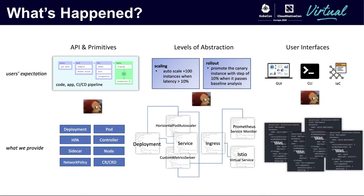First of all, APIs and primitives. What our users focus on are code, applications, and CI/CD pipelines. But what a vanilla Kubernetes cluster provides are workloads like deployments, container-level primitives like sidecars and ports, and infrastructure details like network policy.